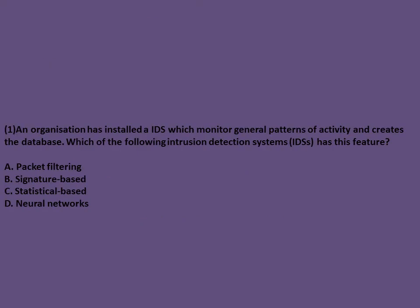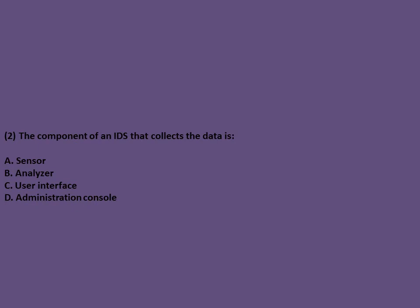Exam question: An organization has installed an IDS which monitors general patterns of activity and creates a database. Which intrusion detection system has this feature? The answer is neural network, as it monitors general patterns and creates its own database.